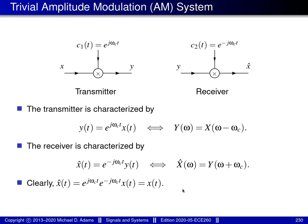Although this trivial amplitude modulation system works correctly in theory, it's not useful in practice. The problem is that both the transmitter and receiver require the generation of complex sinusoidal signals. In the real world, we can't physically generate a signal with a non-zero imaginary part — we're constrained to real-valued signals. However, this system provides valuable insight: although we can't generate complex sinusoids, we can generate real sinusoidal signals, which are closely related. This idea leads to a practically useful variant of amplitude modulation.